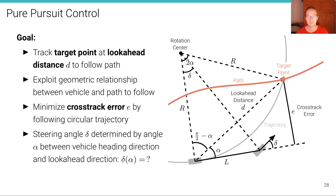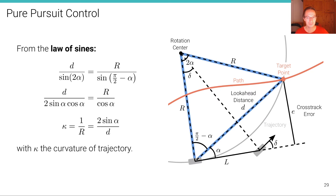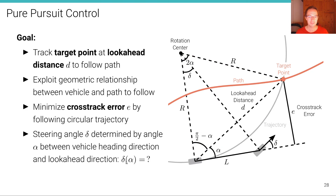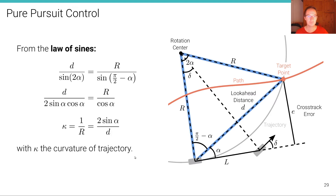So we can define the angle 2*alpha between the line connecting the rotation center to the target point and the line connecting the rotation center to the rear wheel. We also have L, the wheelbase — the distance between the rear and front wheels. Now we have defined all the quantities on this slide, so we can continue. We want to define a relationship relating alpha to delta, so let's apply the law of sines. The law of sines tells us that D, the look-ahead distance, divided by sine of (pi/2 minus alpha) equals...